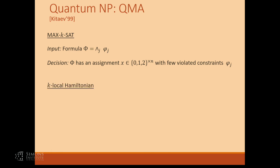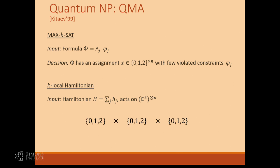Now let's talk about the quantum version. If you think about these formulas as putting constraints on a physical system — the physical system being the variables — the constraints say these variables should take colors satisfying certain conditions. In the quantum case, we represent that by a Hamiltonian. A Hamiltonian is a word used by physicists for the mathematical object representing physical constraints imposed on a certain physical system — magnetic field, nearest-neighbor interactions, and so on. For us, it's just a matrix that says what the constraints on the system are.